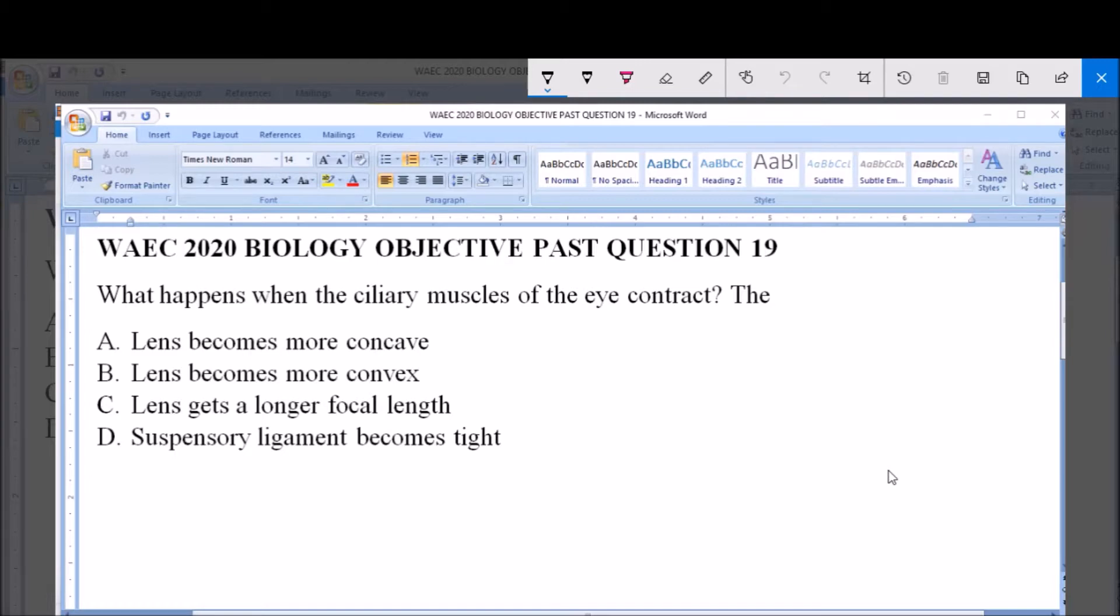What happens when the ciliary muscles of the eye contract? A. Lens becomes more concave. B. Lens becomes more convex. C. Lens gets a longer focal length. D. Suspensory ligament becomes tight.